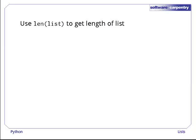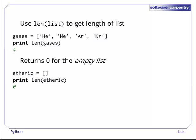If we don't know how long a list is, we can use the built-in function len to find out. As you'd expect, it returns 4 for our list of gases. And it returns 0 for the empty list, which is written as a pair of square brackets with nothing in between.